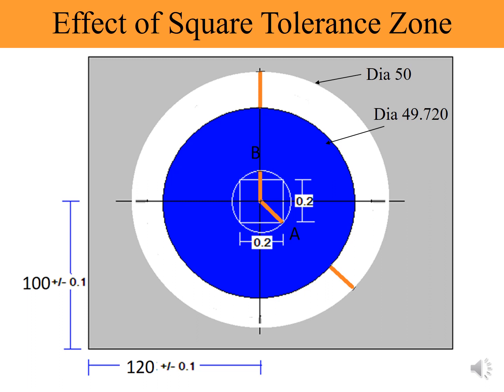The tolerance zone is a square of 0.2 millimeters by 0.2 millimeters. Note: a circle is passed through four corners of the square tolerance zone. Let us assume that the hole is manufactured exactly at 120 millimeters and 100 millimeters. Now keeping this hole as stationary, we will analyze virtually what happens when the pin is shifted at different locations in manufacturing.